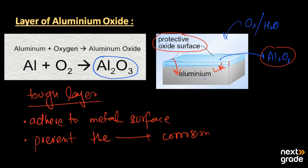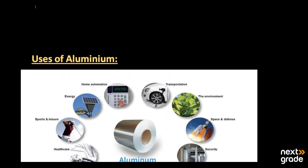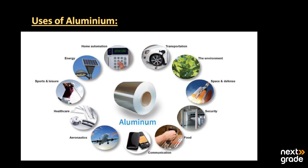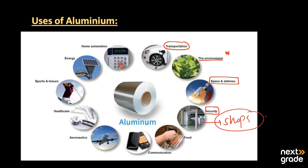Aluminum is widely used. Its uses include: production of transportation vehicles, it is environmentally friendly, it is used in space and defense production, it is used as a security material for detectors and doors in shops and hospitals as a threat alert, it is used in food packaging, and it is used in communication for making chips used in mobile phones.